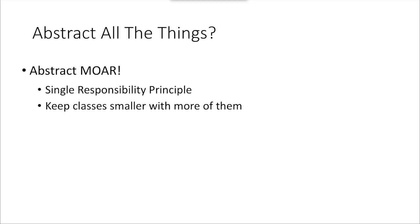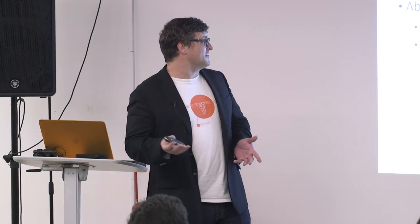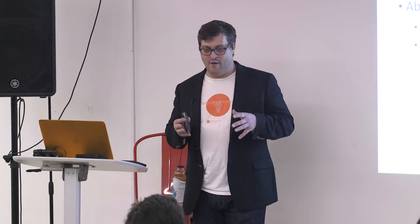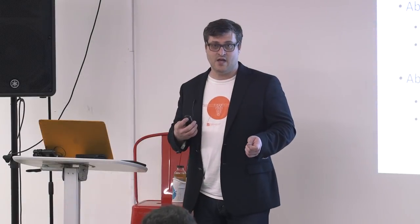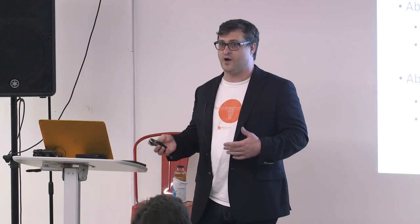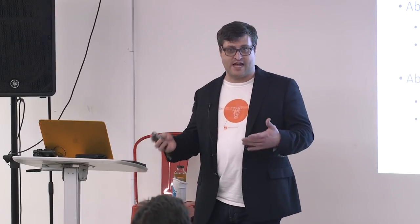Abstract all the things. There is a community against page objects because they say page objects do not abstract enough — they're not following the single responsibility principle because your elements and your methods are on the same page. The idea is you keep your classes small by just having a lot more of them. Then there's the other side that complains page objects are too abstracted — YAGNI: you ain't gonna need it. Don't over-abstract. Don't spend time creating things you're not going to need. This is where becoming a good test automation engineer comes in handy.